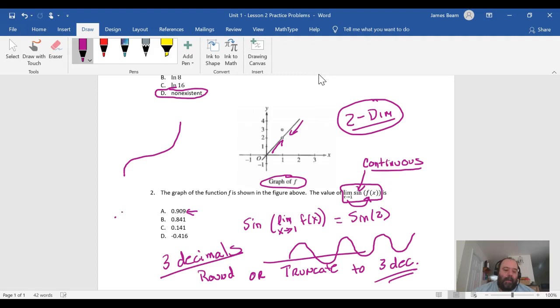If that happened to have been like 0.9097, then the BC exam would accept either 0.909, which is the truncating—you just lopped off the seven—or it would accept 0.910, which is the rounding. Those would be the two acceptable answers according to the college board on the BC. So these are fairly pithy problems that you can get a lot out of.